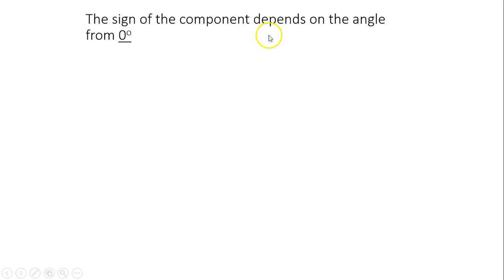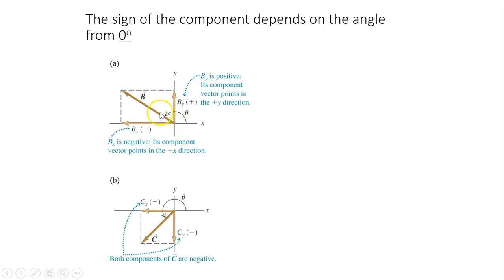The sign of the component depends on the angle from 0 degrees. Let's take a look at vector B. Theta is greater than 90 degrees and less than 180 degrees, so B is in quadrant 2. In this case, y is positive and x is negative.